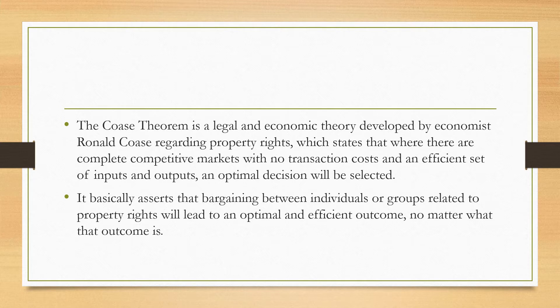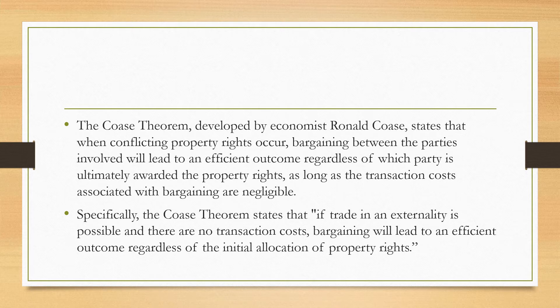The theorem basically asserts that bargaining between individuals or groups related to property rights will lead to an optimal and efficient outcome, no matter what that outcome is — whether it is in favor of one party or the other. When conflicting property rights occur, bargaining between the parties involved will lead to an efficient outcome regardless of which party is ultimately awarded the property rights, as long as the transaction costs associated with the bargaining are negligible. Also, if trade in an externality is possible and there are no transaction costs, bargaining will lead to an efficient outcome regardless of the initial allocation of property rights.